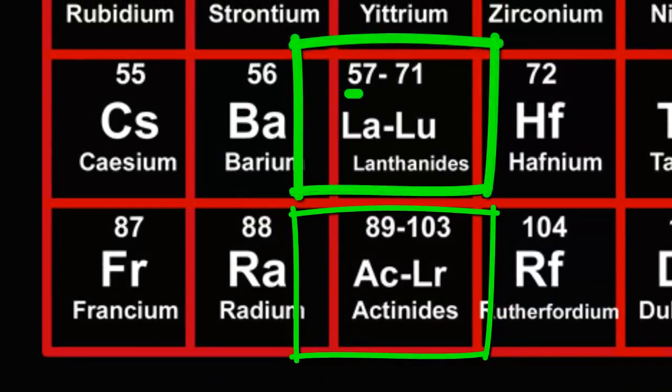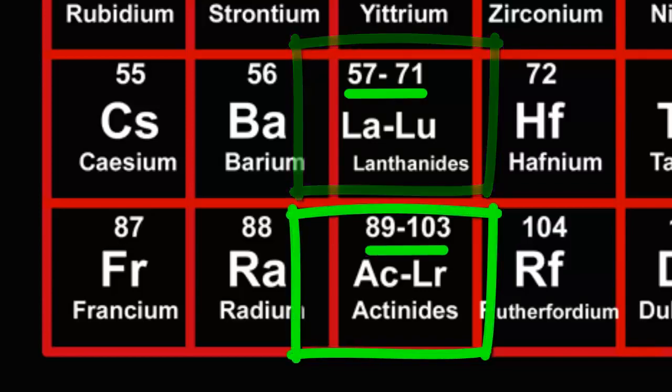The lanthanides are elements 57 to 71, and the actinides are elements 89 to 103.